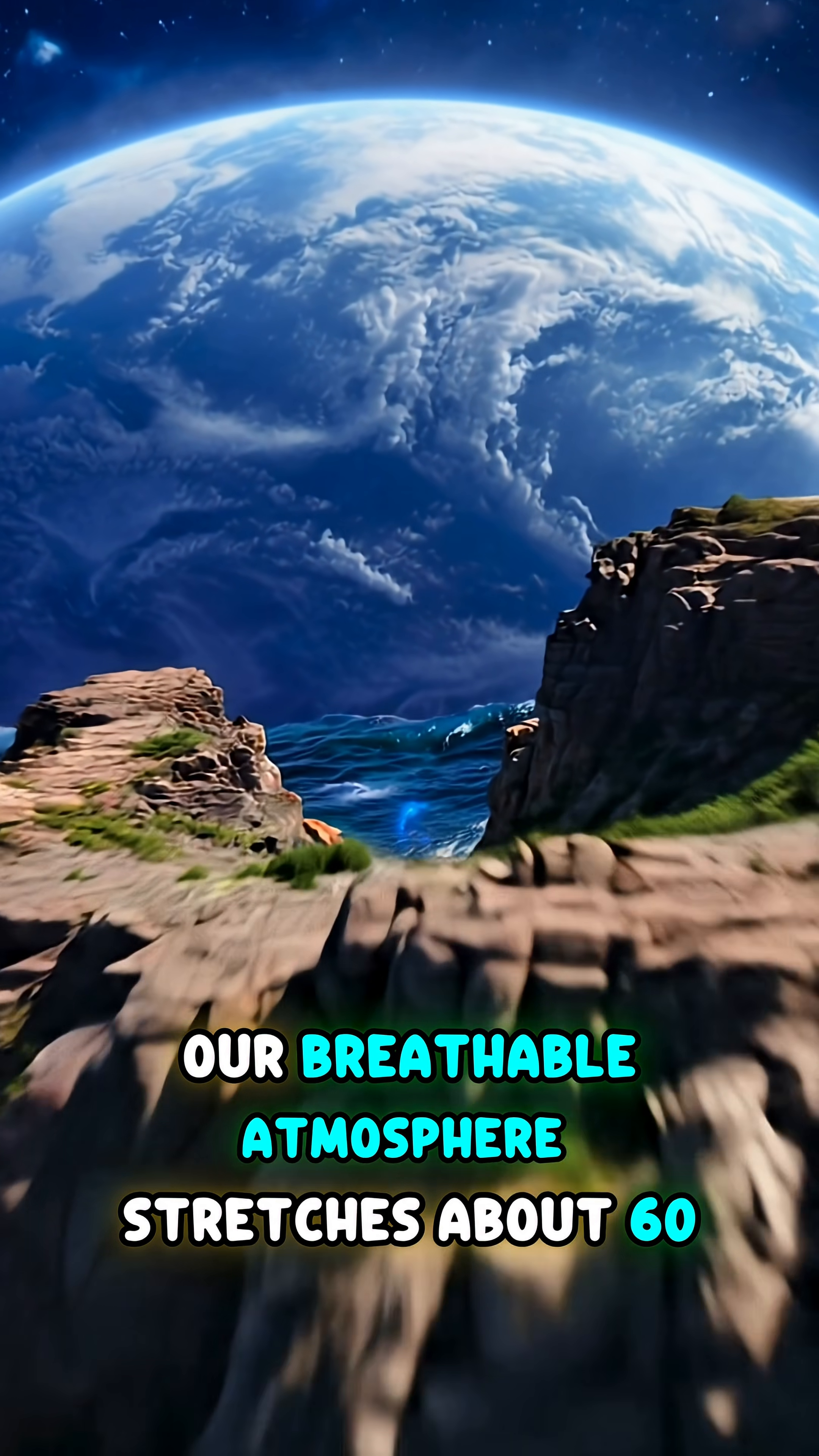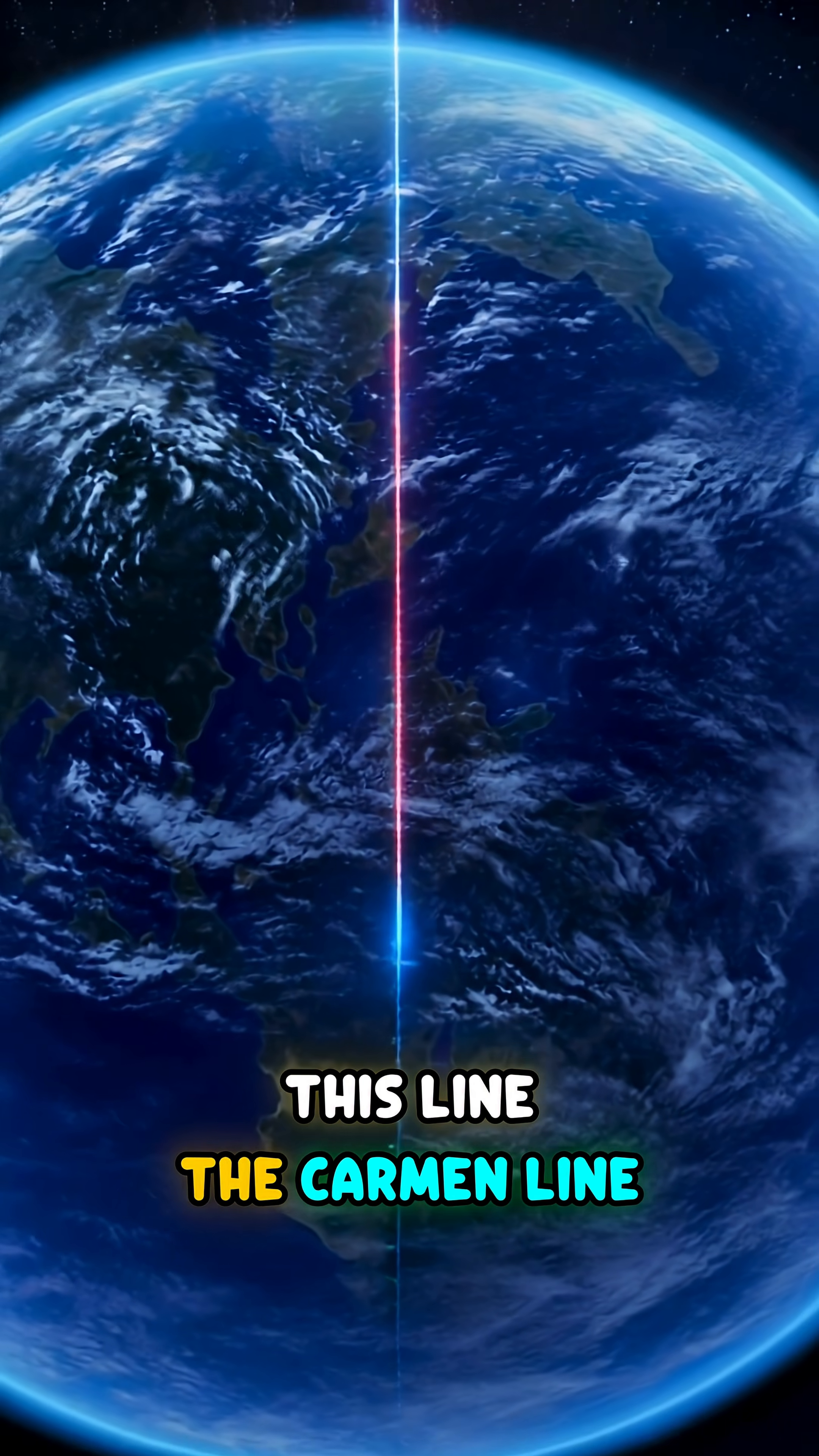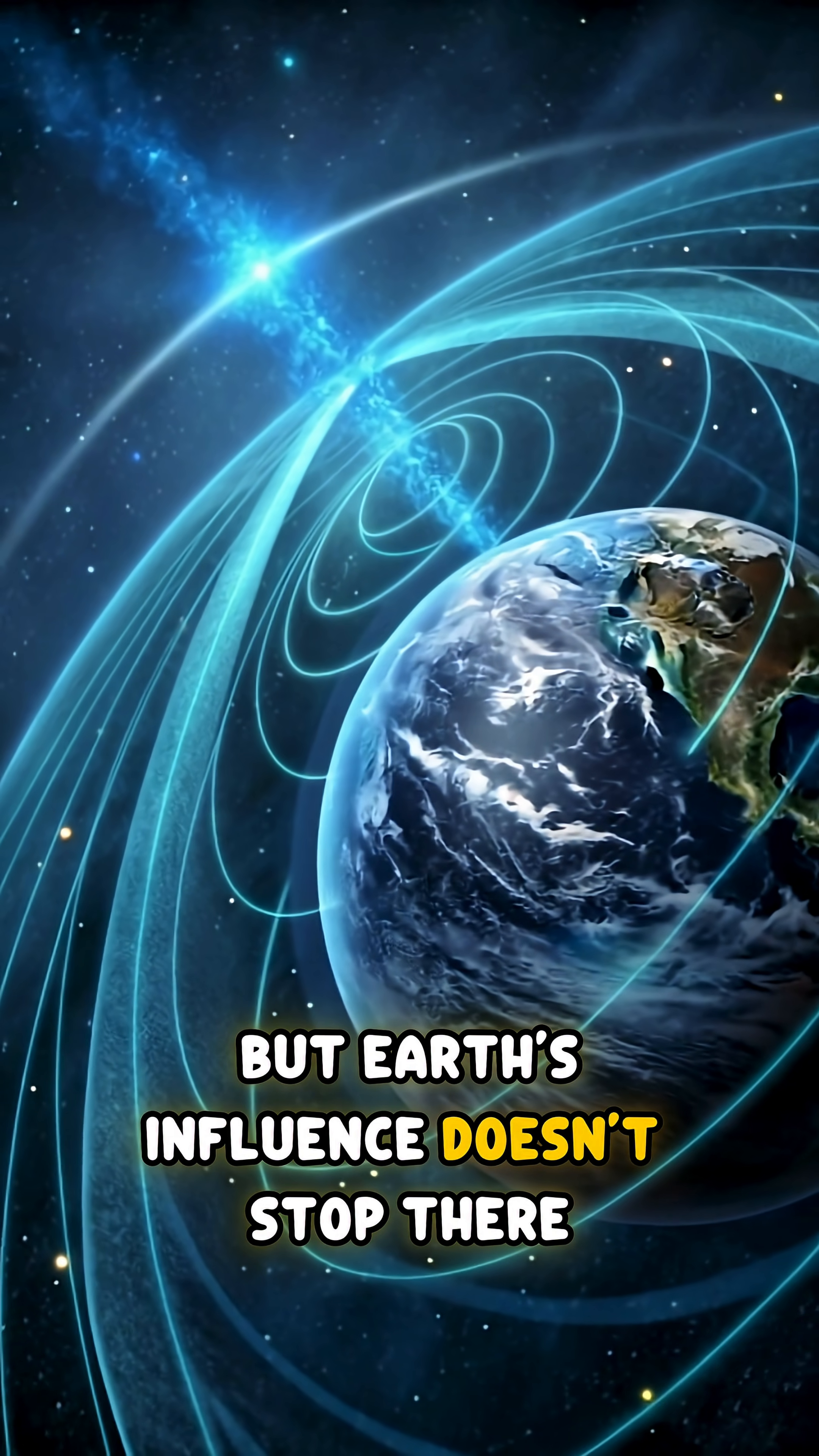Our breathable atmosphere stretches about 60 miles high. Past that, the air thins to nothing. This line, the Kármán line, is what scientists call the start of space. But Earth's influence doesn't stop there.